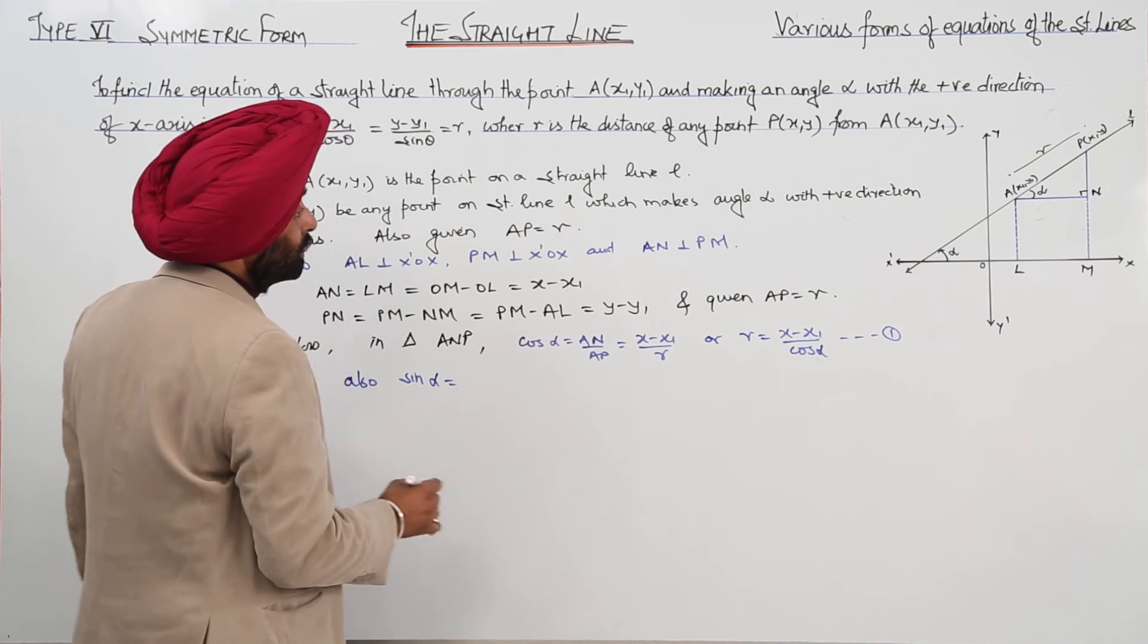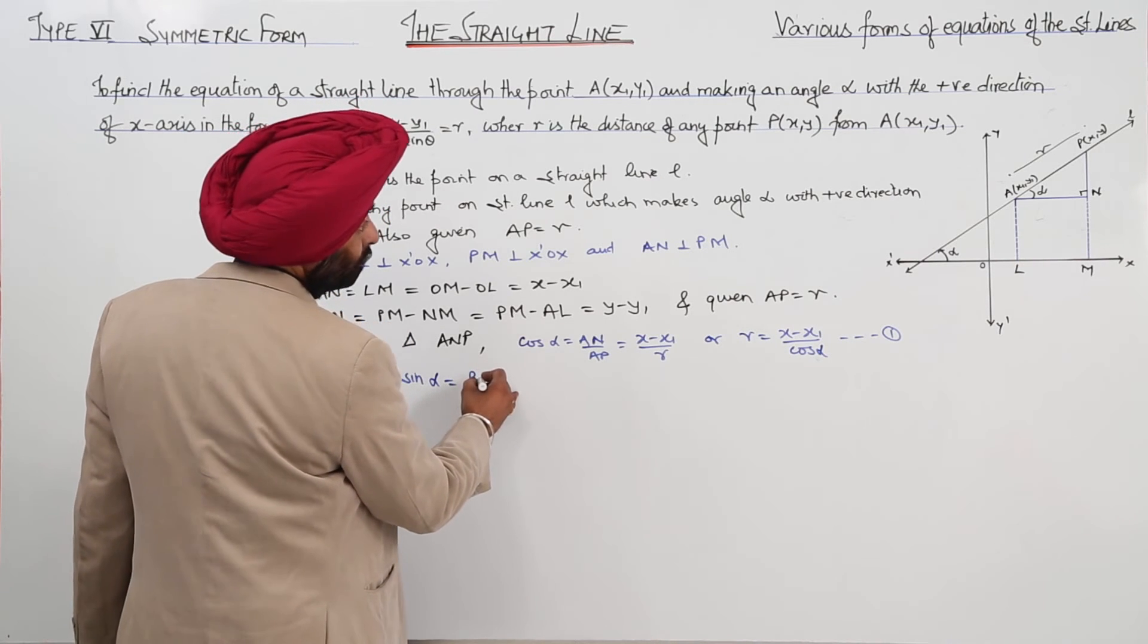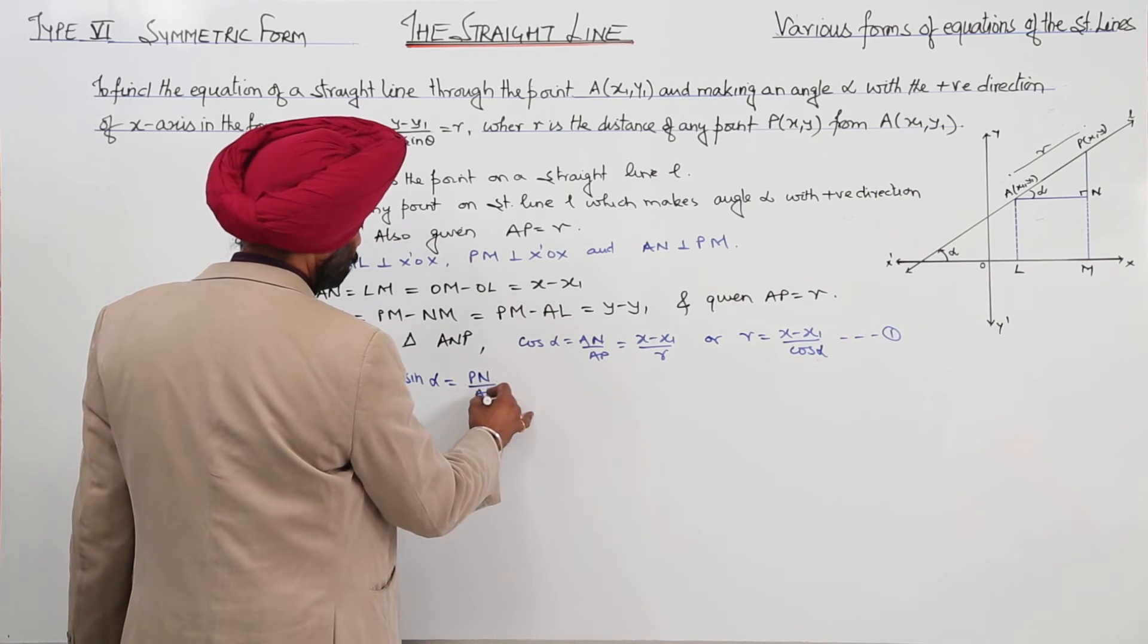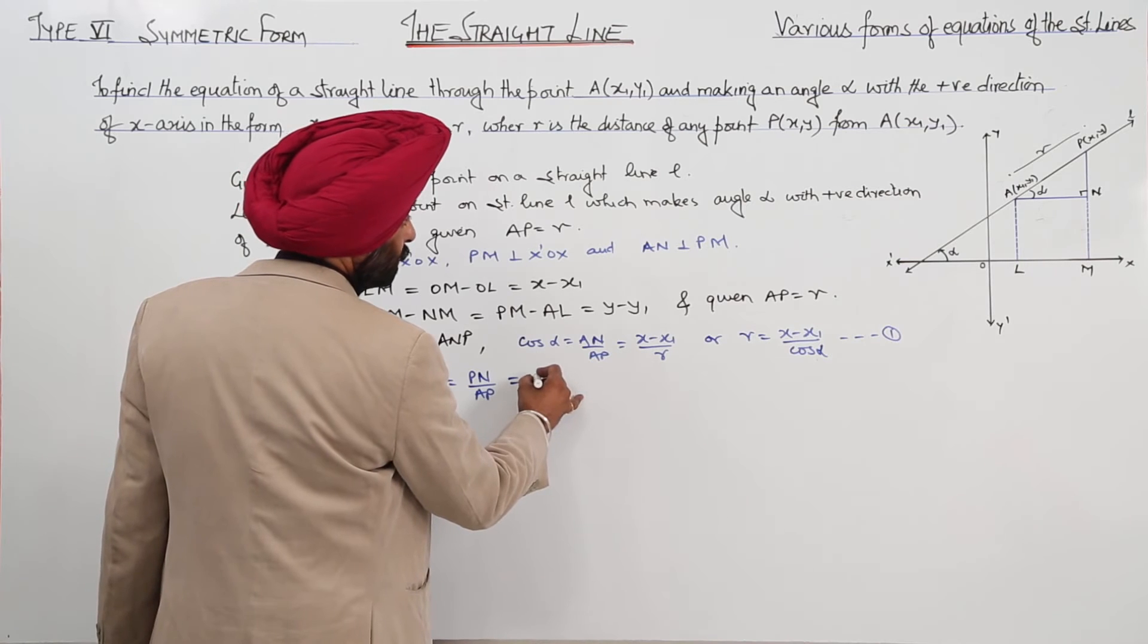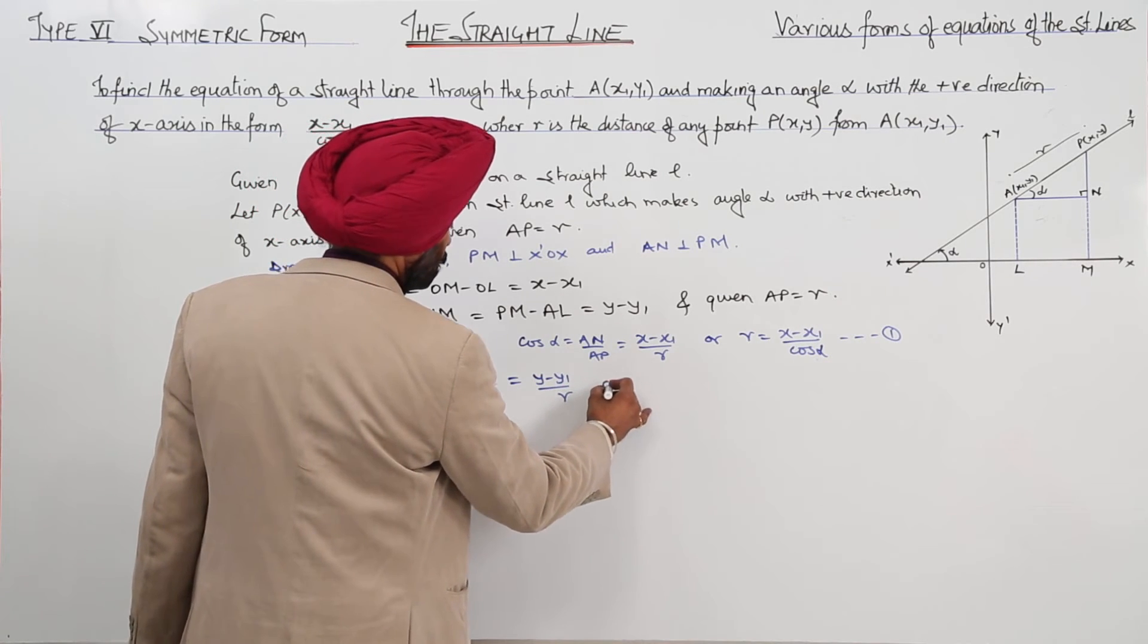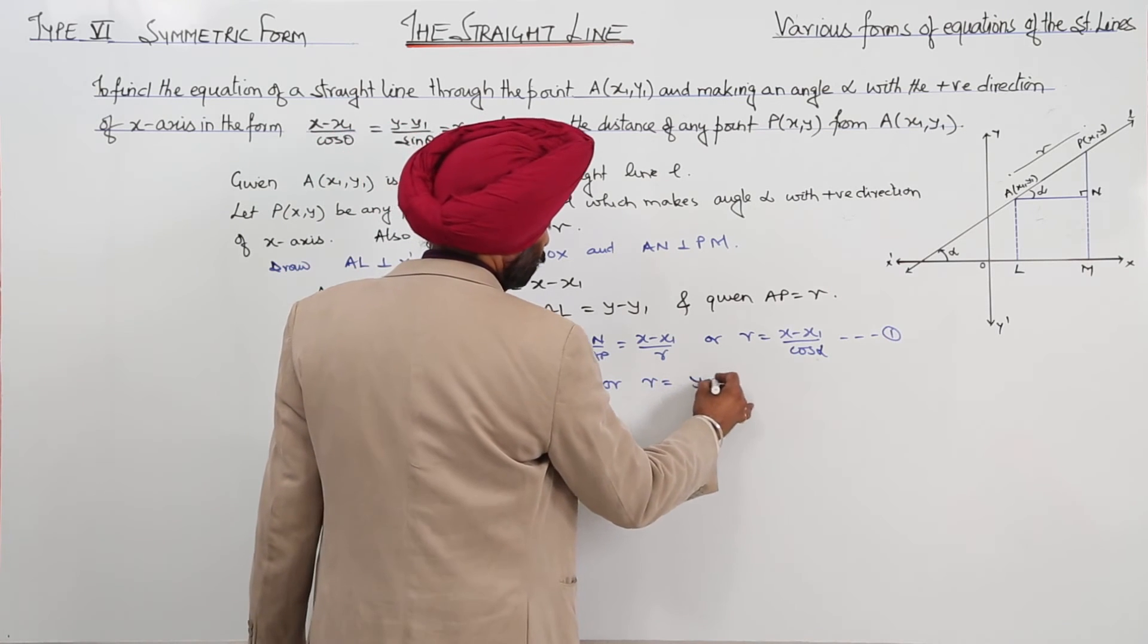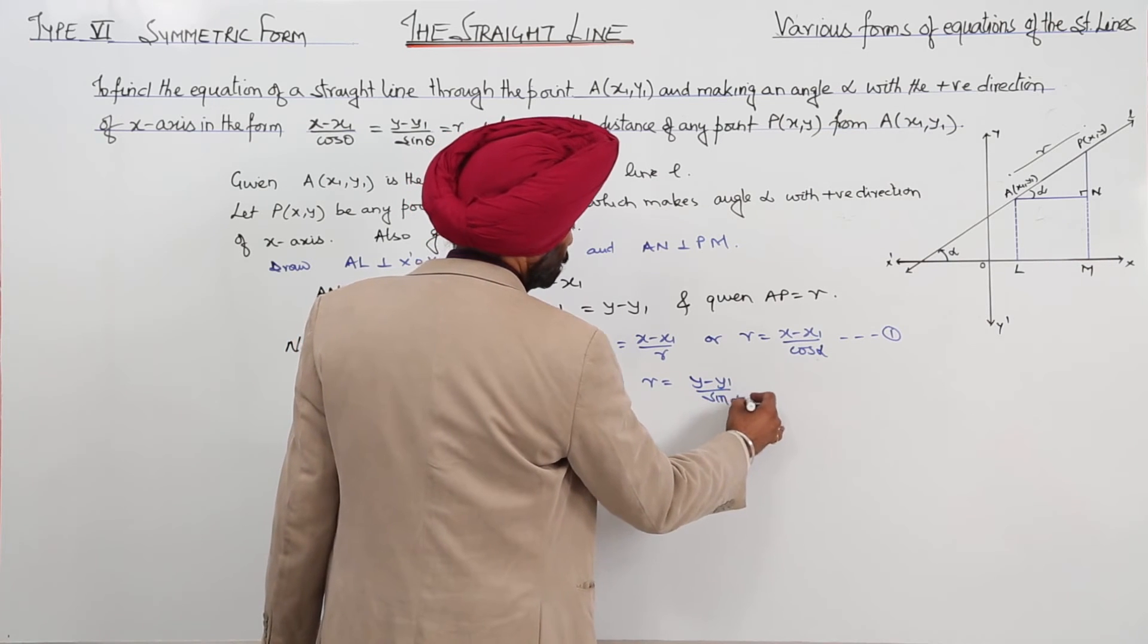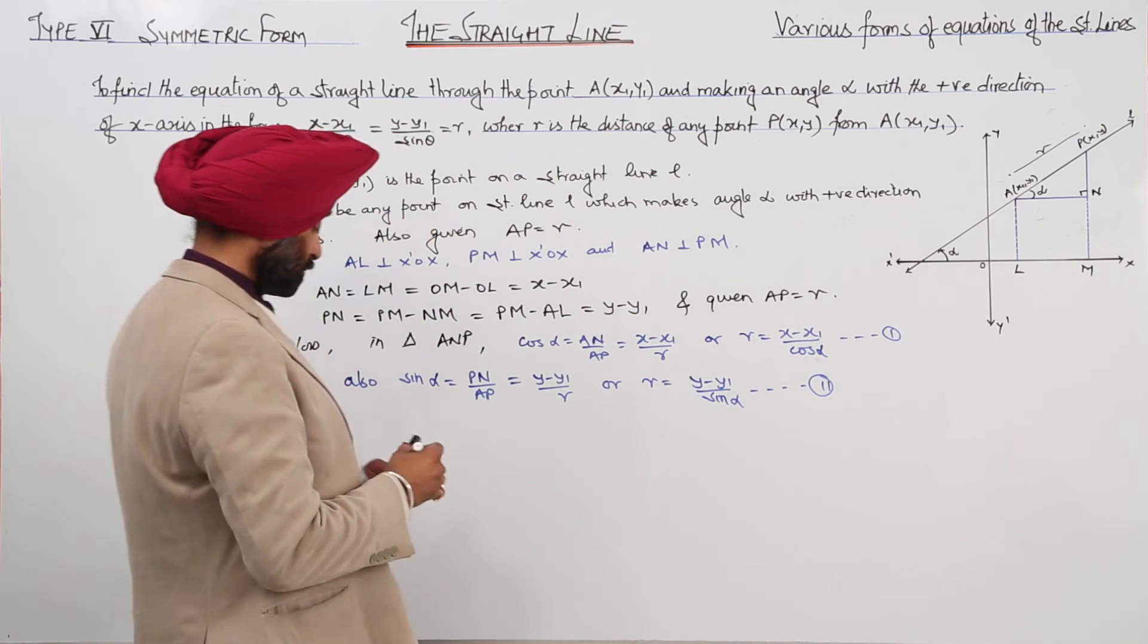Also, sin alpha. Sin alpha will be PN upon AP. This is equal to y minus y1 upon r, or r is equal to y minus y1 upon sin alpha. Equation 2.